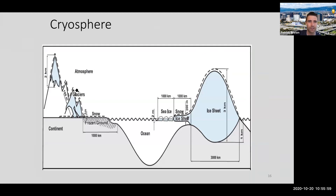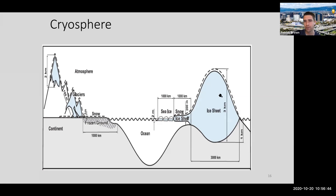We tend to break up the cryosphere into different components: glaciers - frozen water or ice on mountains, often called alpine glaciers; snow on the surface of the Earth; permafrost - soil that's frozen most of the time; sea ice sitting on top of the ocean; and ice sheets. The Greenland and Antarctic ice sheets are categorized specifically as ice sheets - huge pieces of ice so massive they bend down the crust of the Earth under their weight, and miles thick.